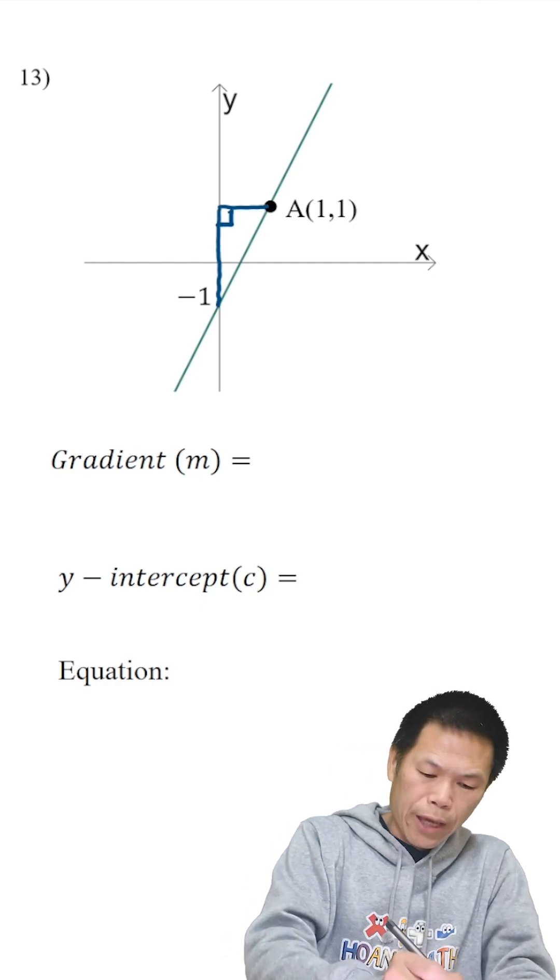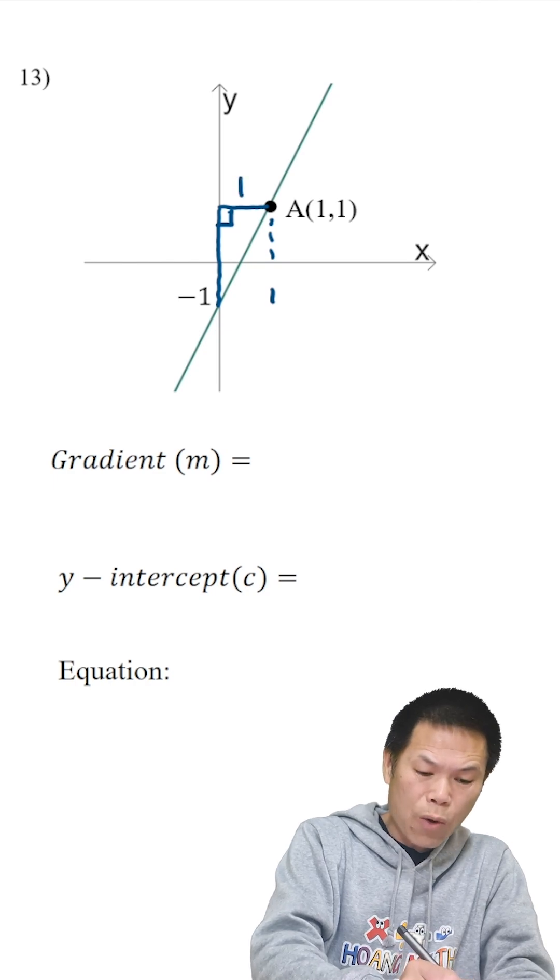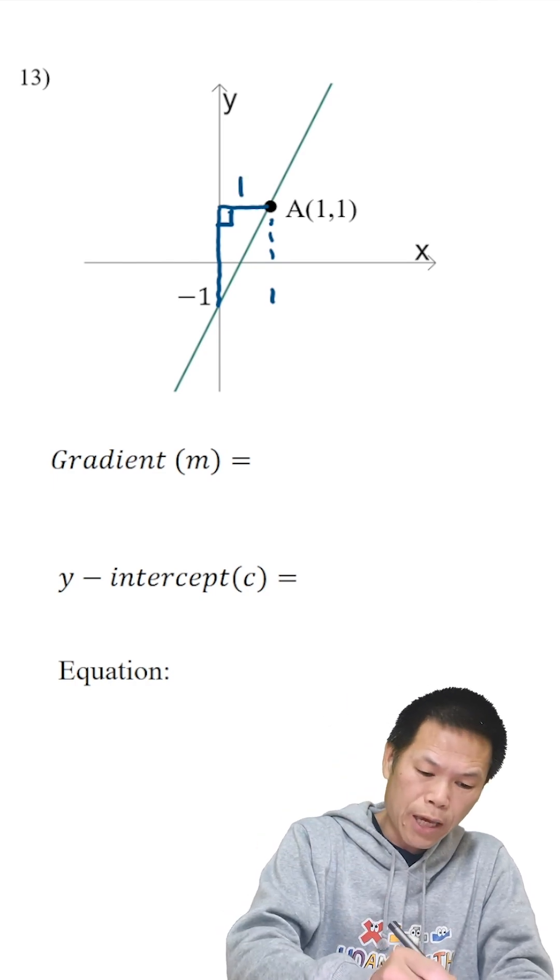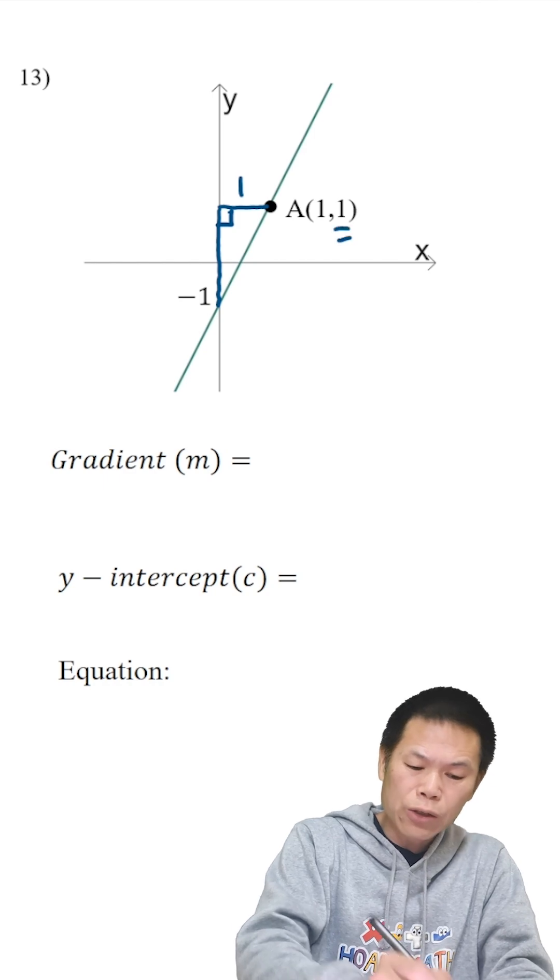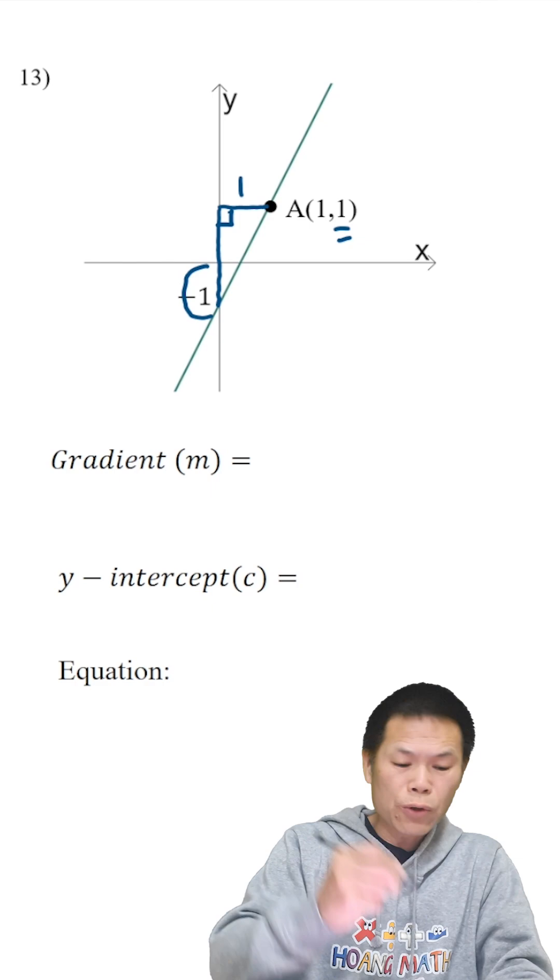And we know that the x value here is 1. So the run is 1, okay? From 0 to 1 is 1 unit. And the y value here is also 1. So from negative 1 to 0 will give me 1 unit.